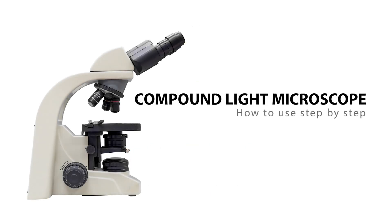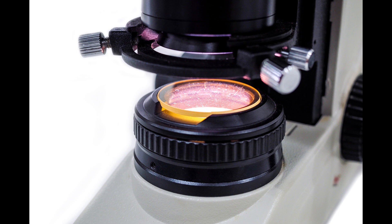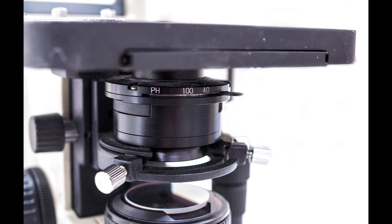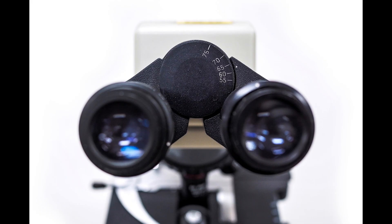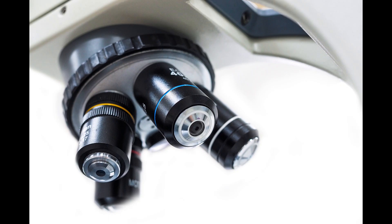Let's start with the compound light microscope. A compound light microscope has at least two systems: an illuminating system and an imaging system. The illuminating system, which concentrates light on the specimen, usually consists of a light source, condenser lens, and iris diaphragm. The imaging system improves resolution and magnifies the image.